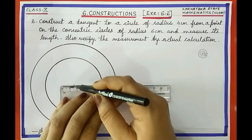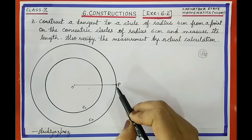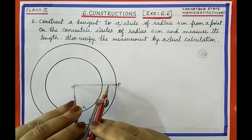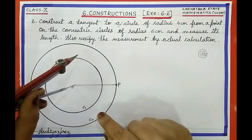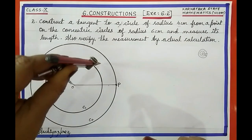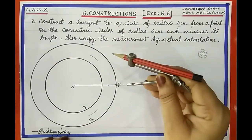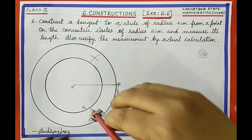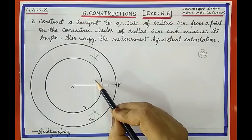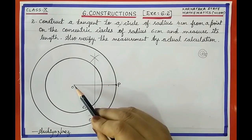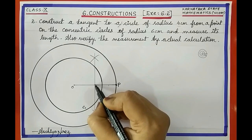To construct the tangent to circle C1 from point P, first join O and P. Then we bisect the line OP. With radius more than half of OP, draw arcs above and below the line OP — first with O as center, then with P as center, cutting the previous arcs. Join the points of intersection of these arcs. This line is the perpendicular bisector of OP, dividing it into two equal parts.